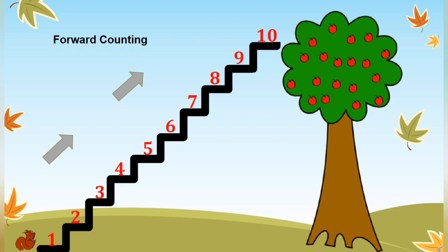The squirrel is hungry and wants to have apples. Let us see how squirrel moves up to the treetop. Now, squirrel takes the first step to number 1 and next is step number 2. Now, the next step is 3.